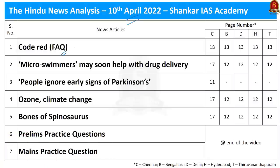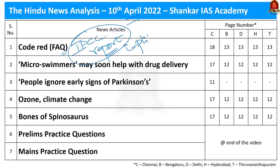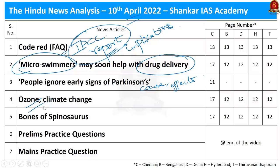The first article is an FAQ article regarding IPCC. We will briefly revise about IPCC and discuss the key findings of the report, as well as the implications of the IPCC report on India. In the second news article, we will discuss about micro swimmers and how they will be helpful in targeted drug delivery. In the third article, we will discuss the causes, symptoms and effects of Parkinson's disease. Then we will discuss what is ground level ozone and upper atmospheric ozone. In the fifth article, we will see what is spinosaurus and its prelims perspective. We will conclude by solving four preliminary practice questions.